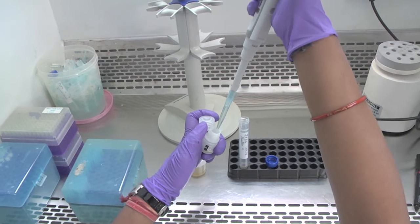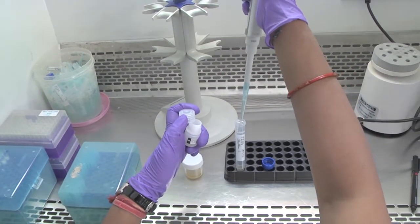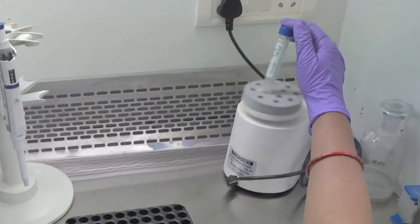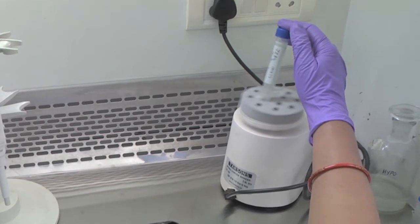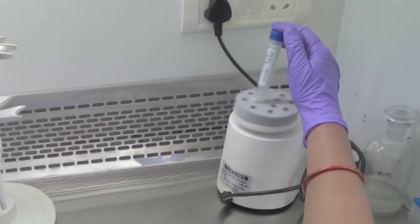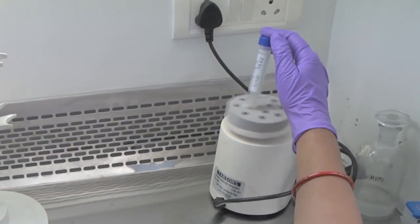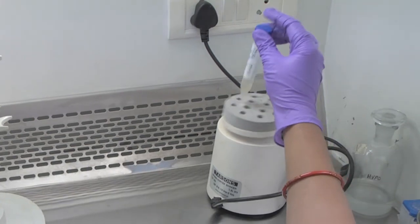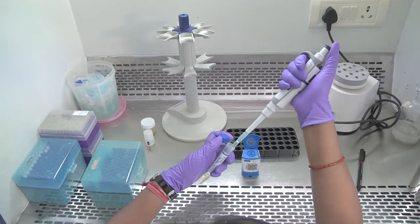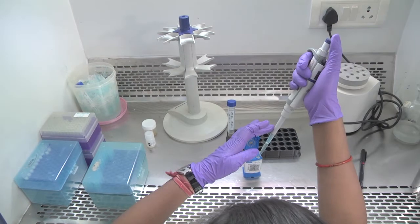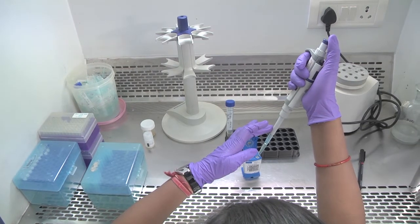The diluent is then mixed with the sample with the help of a pipette. Mix the sample and the diluent well, either manually or with the help of a vortex mixer. Incubate the sample, and after incubation, transfer the sample into the cartridge.